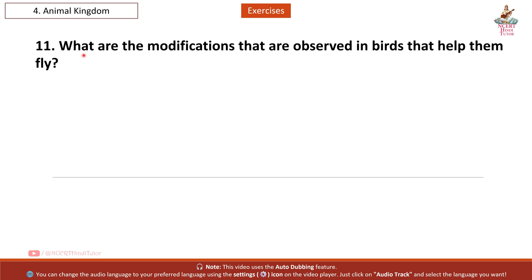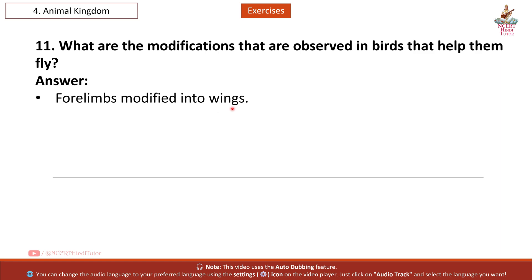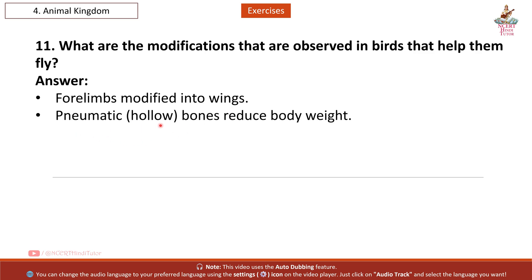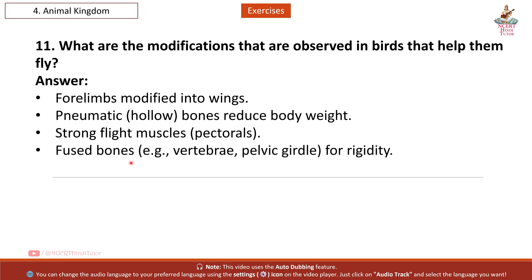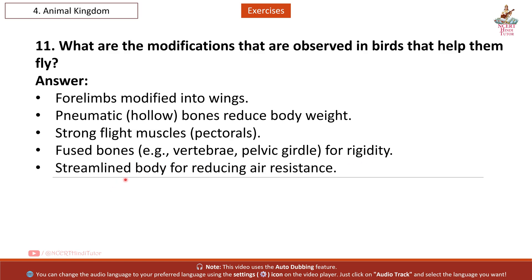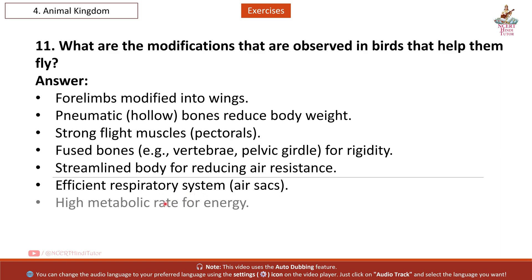Question 11: What are the modifications observed in birds that help them fly? Answer: Forelimbs modified into wings; pneumatic (hollow) bones reduce body weight; strong flight muscles (pectorals); fused bones — for example, vertebrae and pelvic girdle — provide rigidity; streamlined body reduces air resistance; efficient respiratory system with air sacs; and a high metabolic rate for energy.